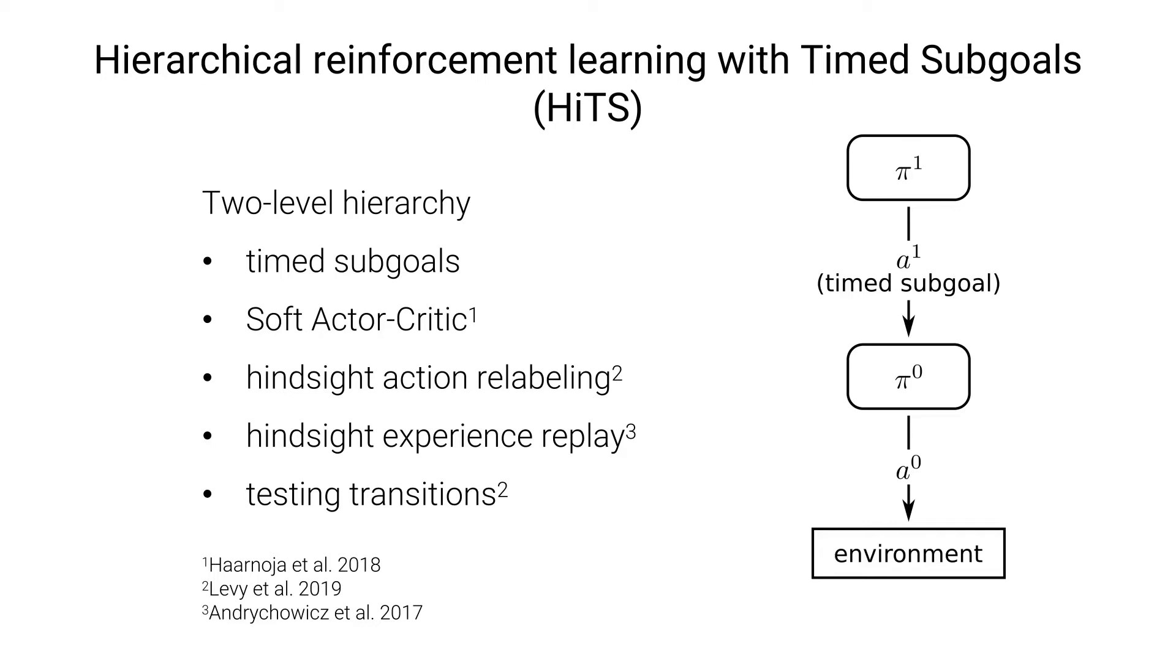Finally, testing transitions penalize the high-level for choosing a timed subgoal that the low-level could not achieve. This ensures that the high-level learns to emit only feasible timed subgoals.